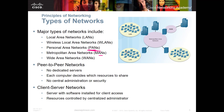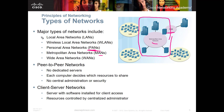A metropolitan area network (MAN) might cover government buildings or a city-sized area. You can also have a campus area network (CAN) — think of a college with multiple buildings all connected together. You might have multiple local area networks inside that campus area network, and that CAN could connect into a metropolitan area network or a wide area network.